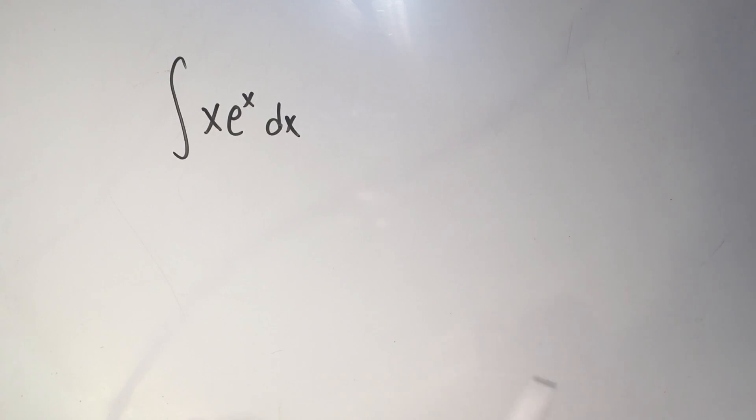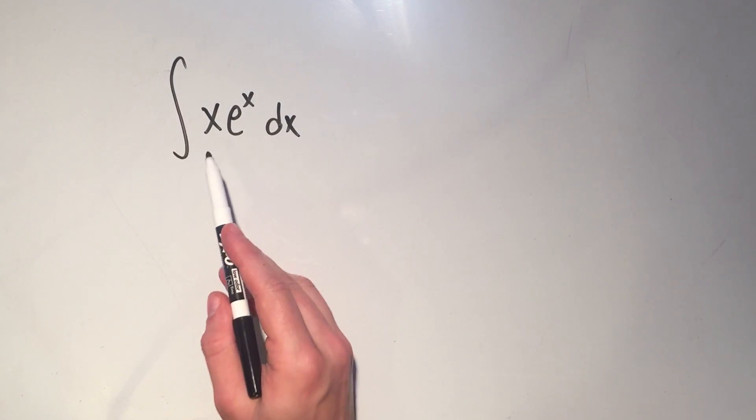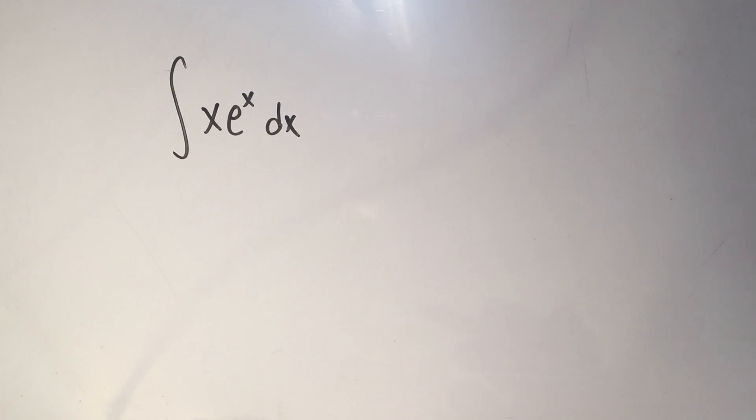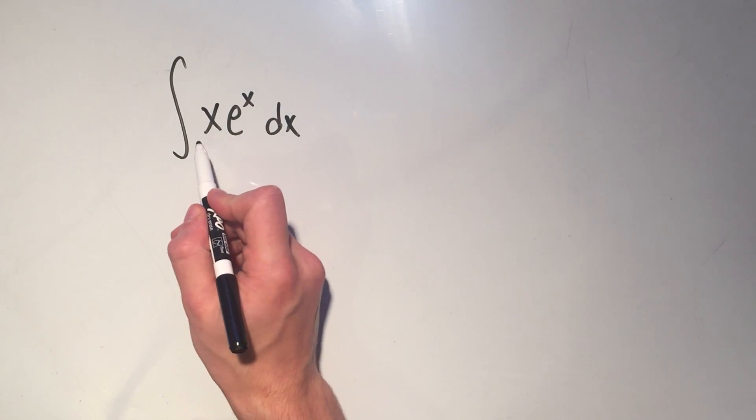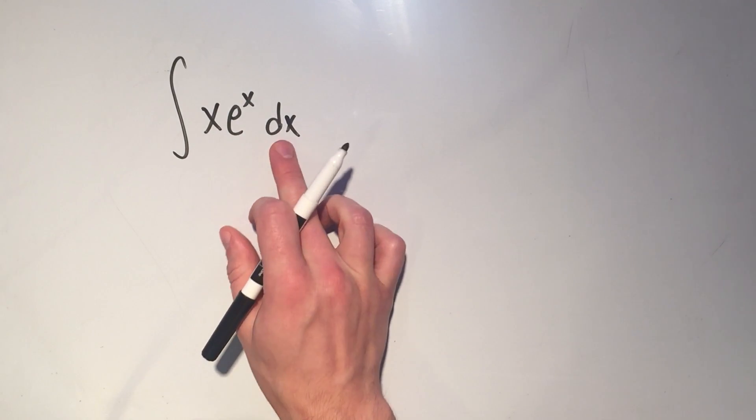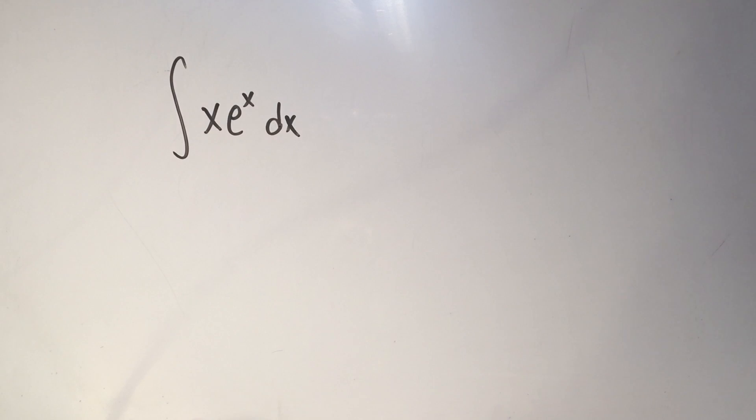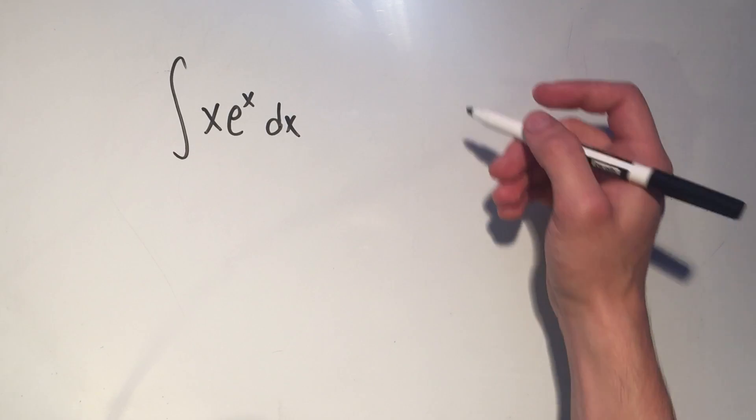I have a quick example of an integration by parts problem here, and it's the integral of x times e to the x dx. I know I have to use integration by parts with this because I have the integral of a product. I've got something times something, and there's no u substitution here, there's no tricky simplification that I can do, so my only real option is to use integration by parts.